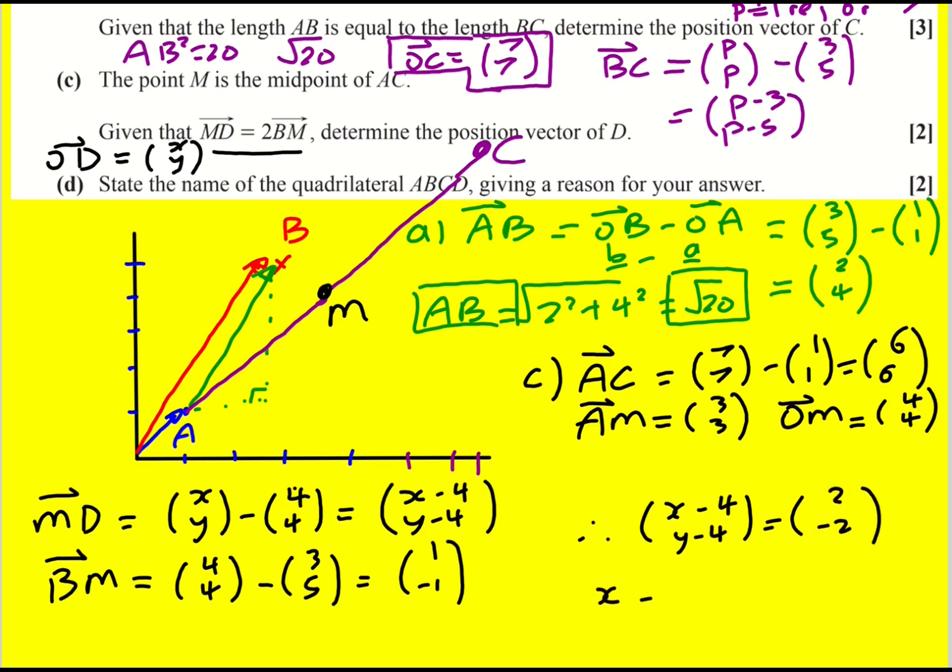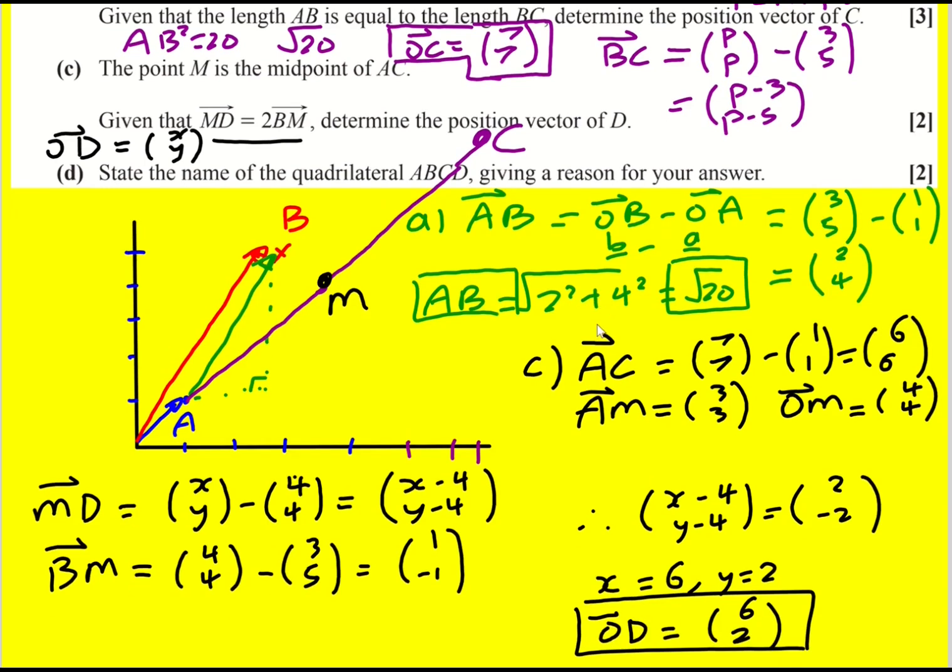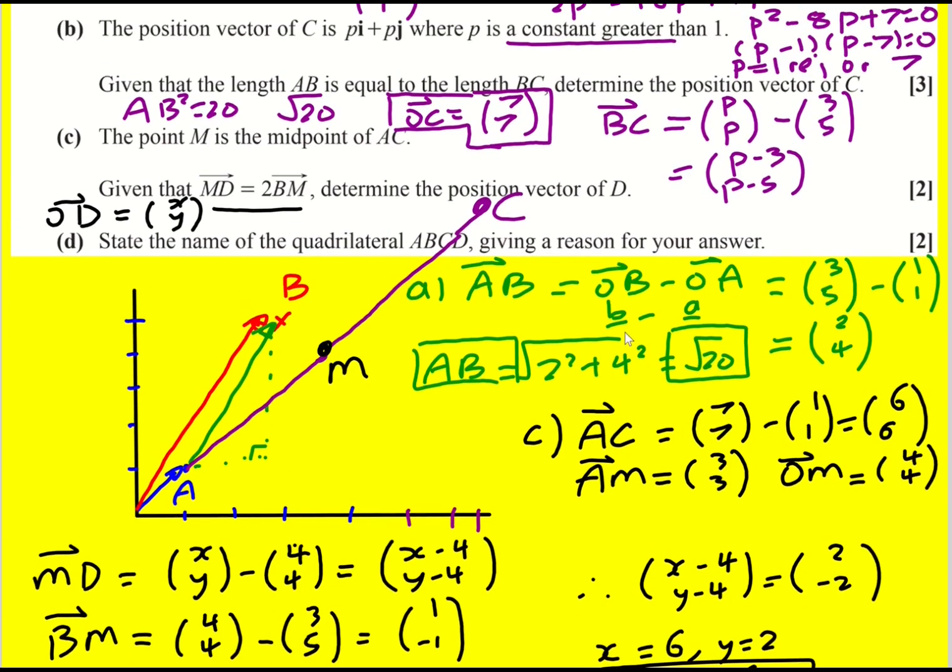That means x is going to be 6, y is going to be 2. We're there. OD is going to be 6, 2. It's a bit fiddly, isn't it? But you've just got using these same ideas we used right at the start to get the vectors and just carefully work your way through it. That's my advice. Okay, so 6, 2, 1, 2, 3, 4, 5, 6, 1, 2. D is going to be about here.